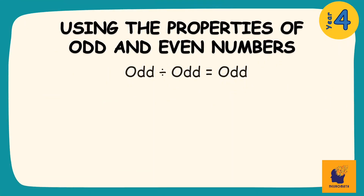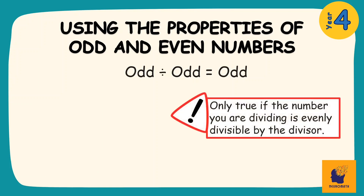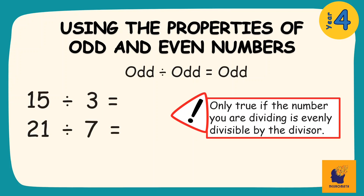The second thing we need to understand is that an odd number divided by an odd number gives us an odd number as an answer. However, this will only be true if my dividend is evenly divisible by my divisor. So I could have problems like 15 divided by 3 or 21 divided by 7. Because the odd dividend is evenly divisible by the odd divisor, I will get an odd number as a result. 15 divided by 3 is 5, an odd number, and 21 divided by 7 is 3, an odd number.